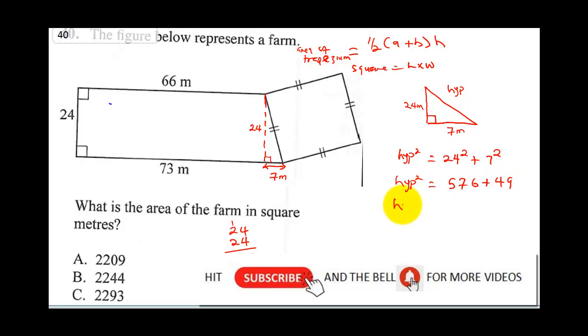So hypotenuse squared will be 576 plus 7 squared, which is 49. So when you sum this up, 9 plus 6 is 15, carry 1. 1 plus 7 is 8. 8 plus 4 is 12. Put 2 and carry 1, 5 plus 1 is 6. That will be 625. Therefore, our hypotenuse will now be square root of 625, and square root of 625 is 25. So now we know the square is 25 meters. Everywhere is going to be 25 meters.